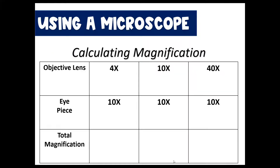So for the low power objective, 4 times 10 is 40 times the original size. Using the medium power objective gives you 100 times the original size. And if you use the high power objective, it's going to be 400 times the original size of the specimen, which is quite magnified — sometimes that's a little too much magnification.